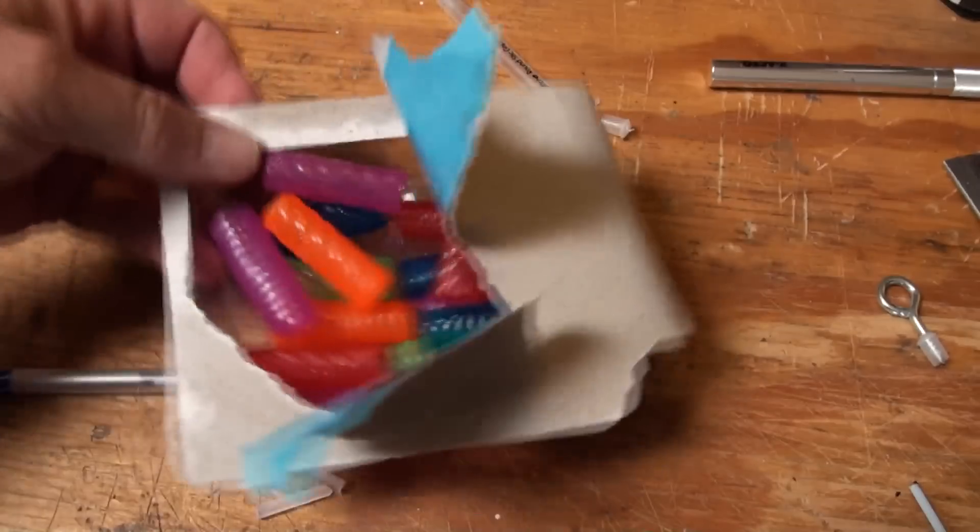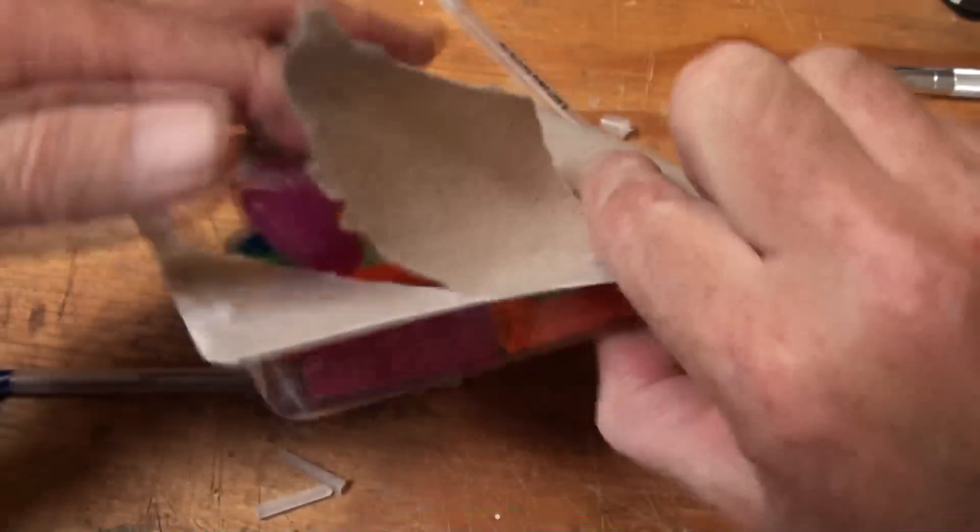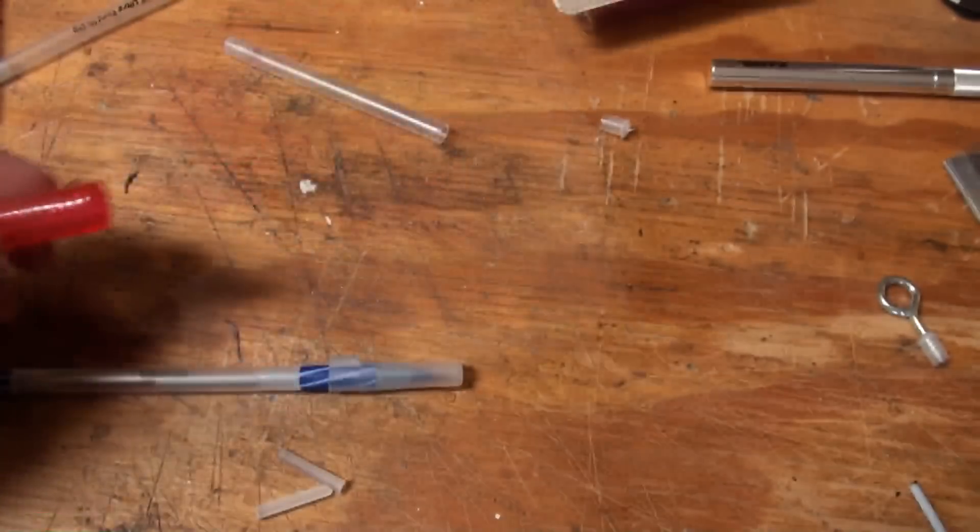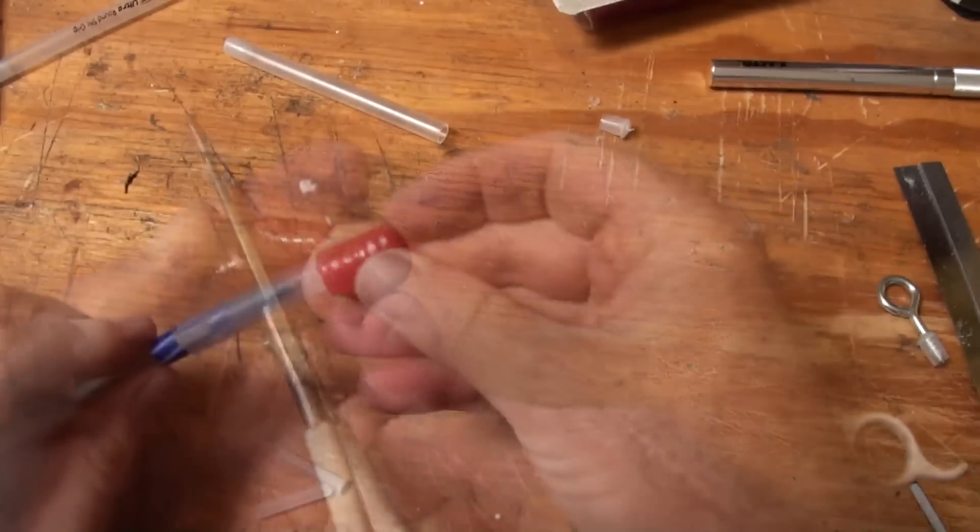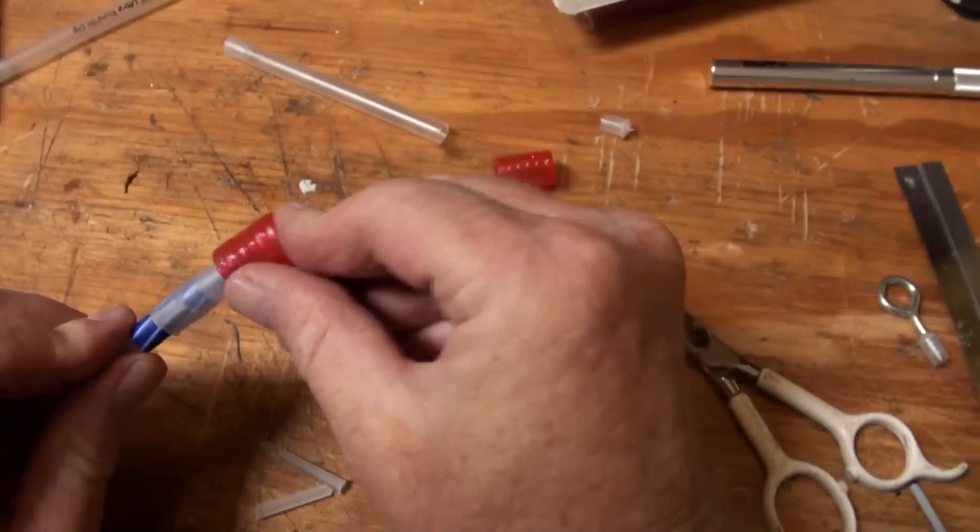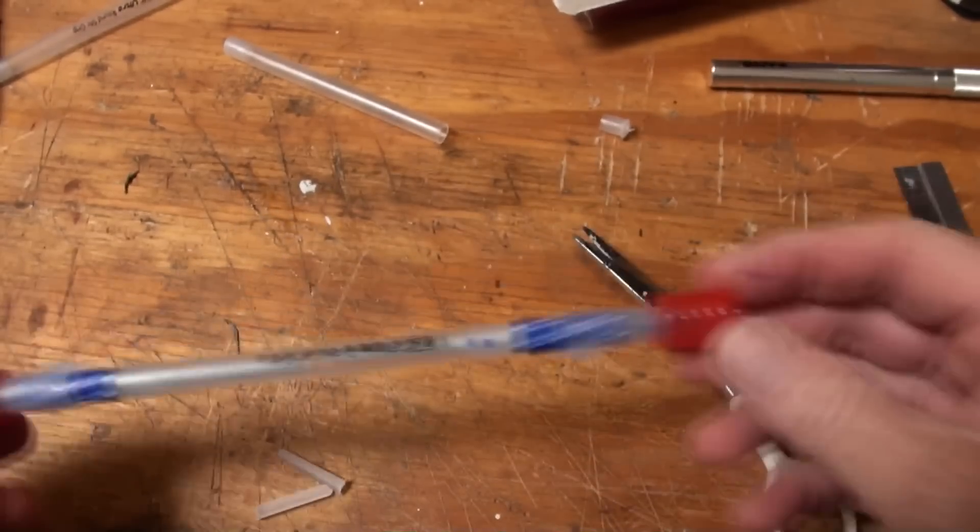I bought a box of these grippy things at Walmart. I think they were $1.96. Cut it in half. You are now done.